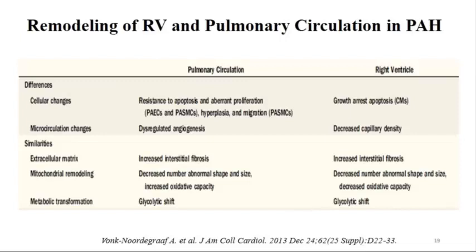Remodeling happens in both the pulmonary circulation and the right ventricle, with similarities and differences. In the pulmonary circulation there is resistance to apoptosis with cell proliferation and plexiform lesions occluding the vascular bed. In the right ventricle there is apoptosis and growth arrest, eventually resulting in a thin right ventricle. Regarding microcirculation, you have angiogenesis in the pulmonary circulation but decreased capillary density in the right ventricle. Similarities include fibrosis, mitochondrial remodeling and dysfunction, and a shift to the glycolytic metabolic pathway.